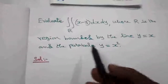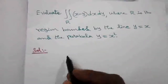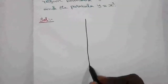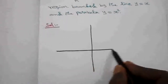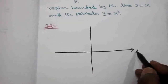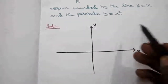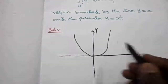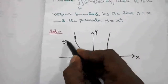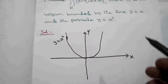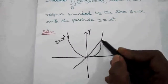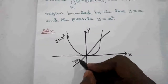The given line and parabola — we can draw the diagram. On the y-axis and x-axis, the given parabola y equal to x square is a U-shape. And the straight line y equal to x is passing through the origin.